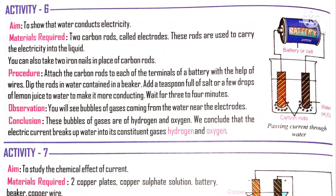The materials required are 2 carbon rods, called electrodes. There should be 2 electrodes: one acts as anode and one acts as cathode. Anode carries positive charge whereas cathode carries negative charge. The rod connected to the positive terminal of the battery is called anode, and the rod connected to the negative terminal is called cathode.